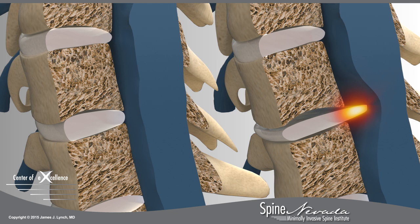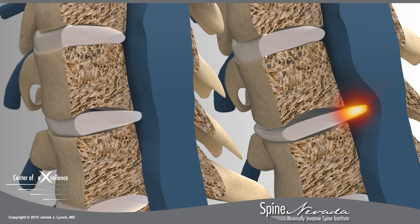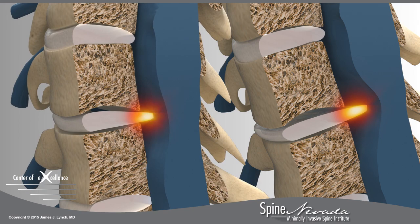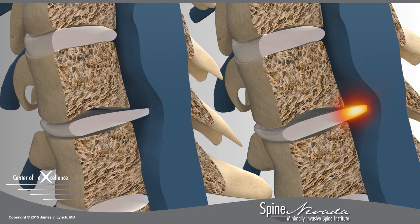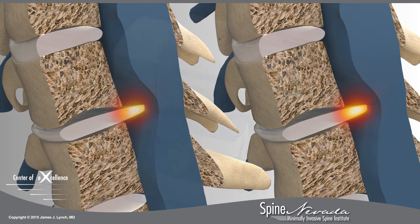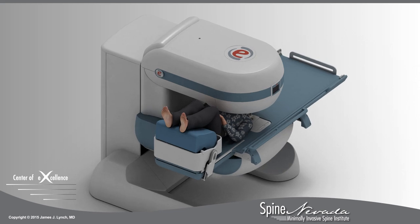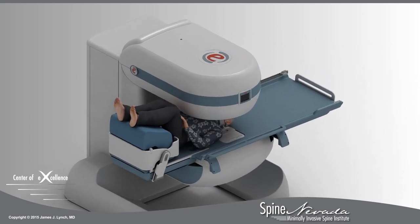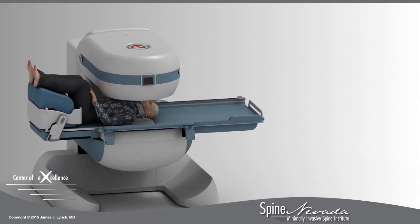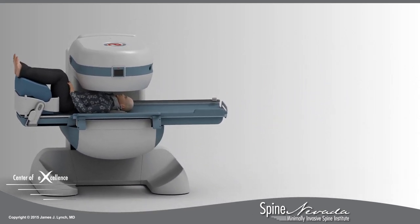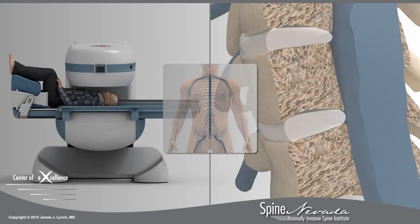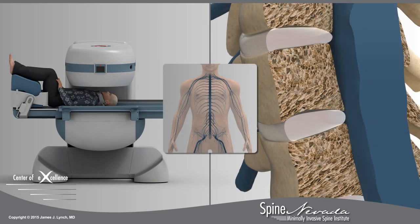Supine images frequently fail to document disc herniation or spinal cord compression, while MRIs taken in weight-bearing or flexion extension show the source of the patient's pain. A stress test MRI helps doctors at Spine Nevada diagnose and understand positional symptoms, which often affect the patient only when sitting or standing.